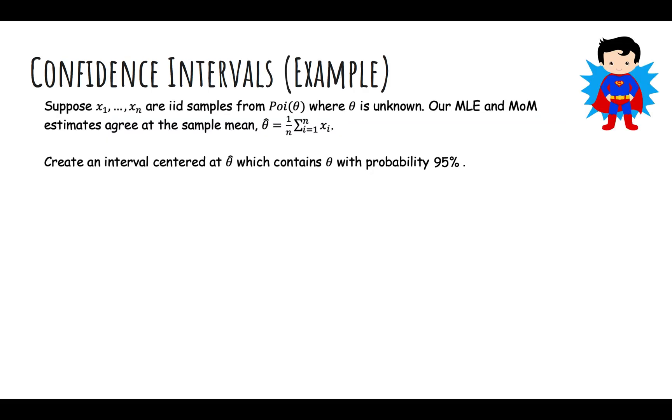Now let's do an example. Suppose we have n samples from Poisson theta. Our maximum likelihood and method of moments estimators were both the sample mean. We want to create an interval around theta hat which contains theta with probability 95%. Recall the mean and variance of a Poisson are both theta. That means the expected value of our sample mean is theta, and our variance is sigma squared over n, which is theta over n.